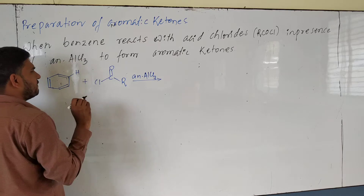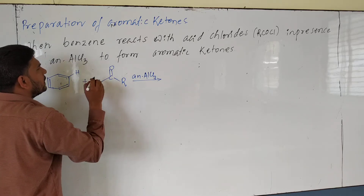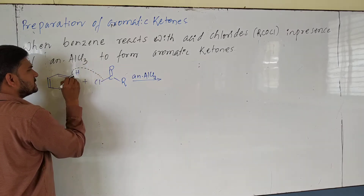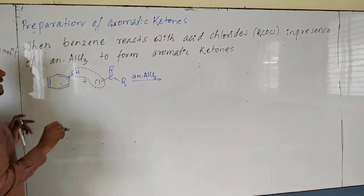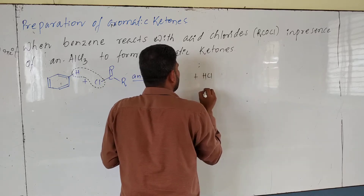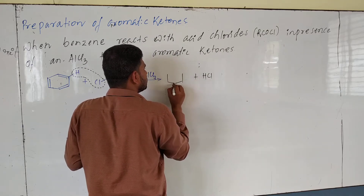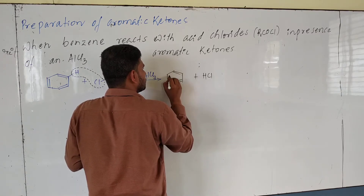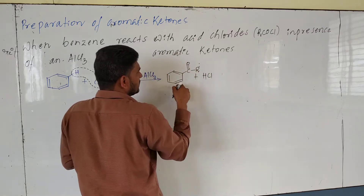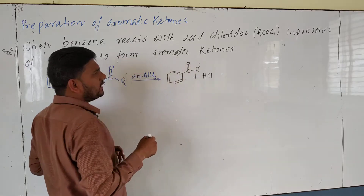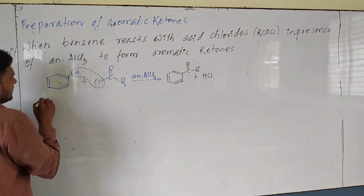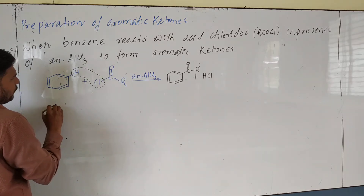What happens here is that there is a removal of H+ which combines with Cl− — so there is removal of HCl. The product formed is a C=O with R group, which is an aromatic ketone. During this process there is a generation of an electrophile — what is the electrophile? This is an electrophilic substitution reaction.